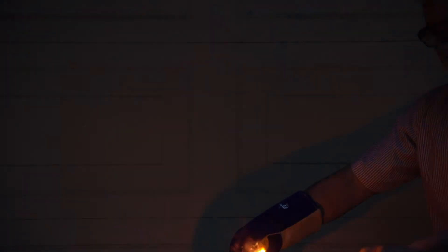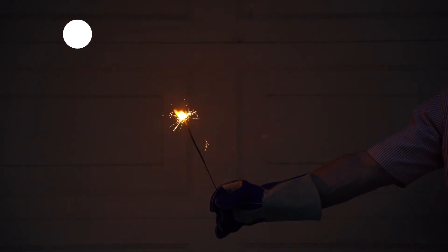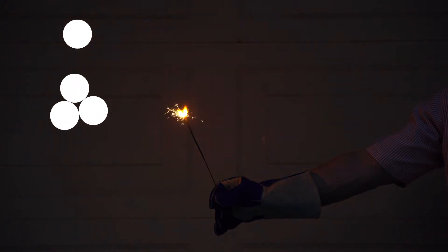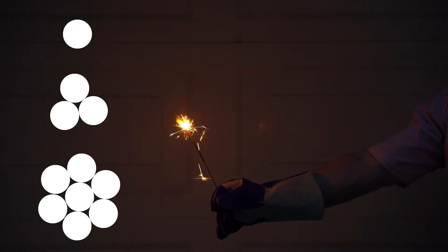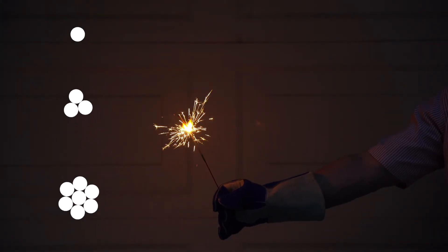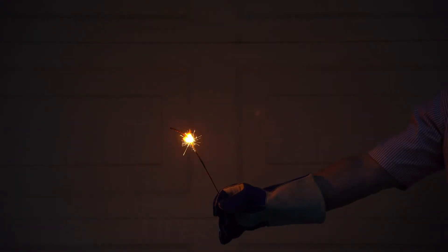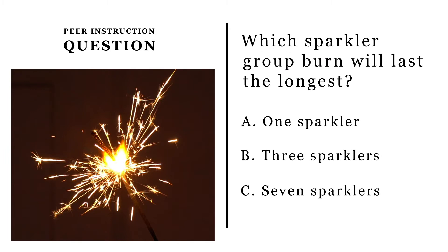We can also visualize these concepts with sparklers. I am going to light a single sparkler — a low mass star — three sparklers arranged in a triangle — a medium mass star — and a group of seven sparklers arranged like hexagonal mirror segments representing a massive star. We certainly expect that the seven sparkler combination will be brighter than the three sparklers, which will be brighter than one. We can also time how long they last. Which of the sparkler stars will burn the longest: one sparkler, three sparklers, or seven sparklers?